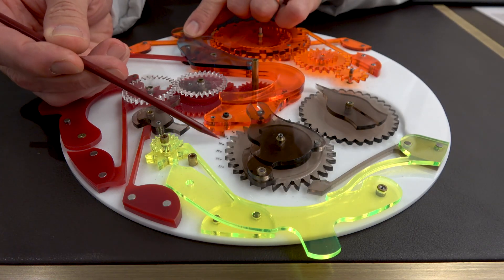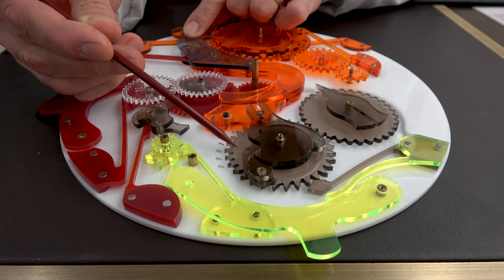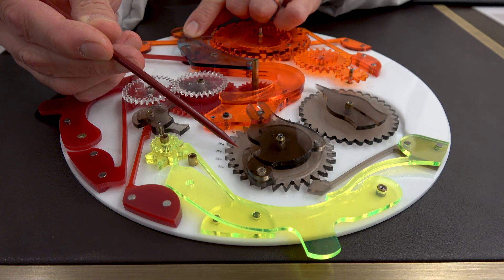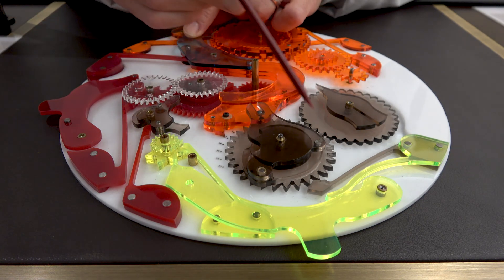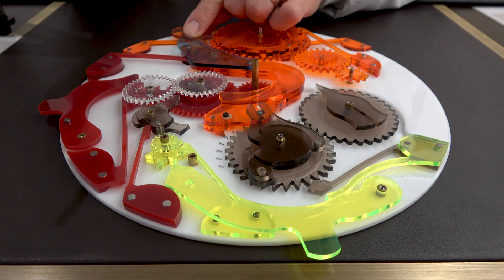We have a click here on the great lever. This click engages this wheel that we call the star of 31 because it's got 31 points for 31 days in a long month.